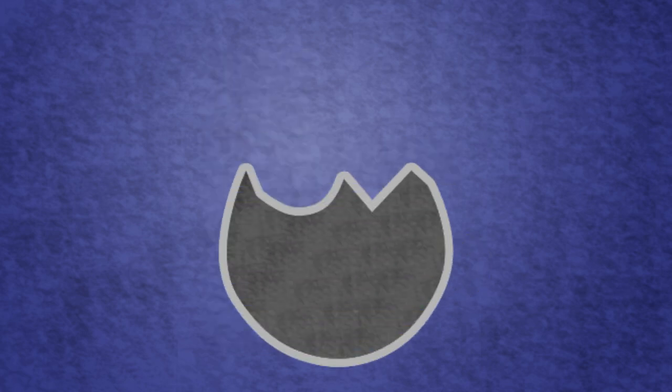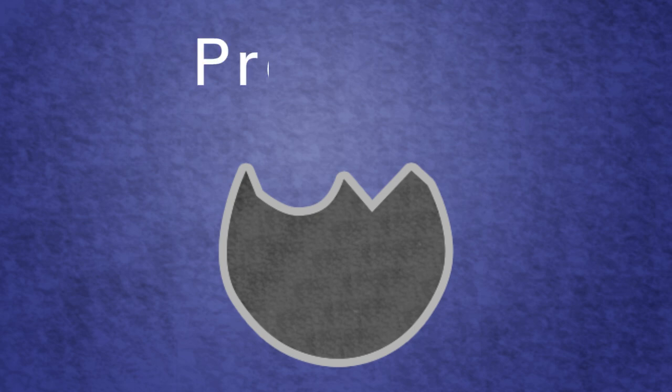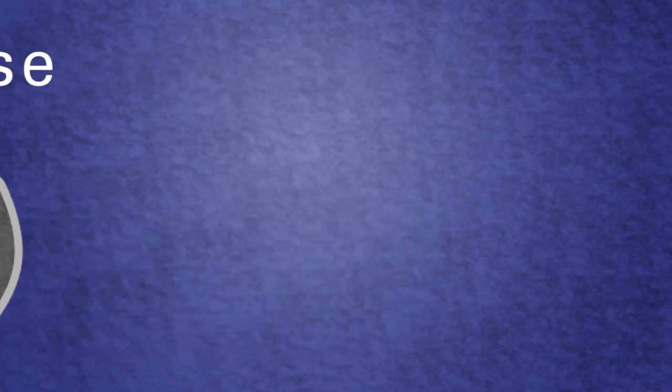We can tell if something is an enzyme just from its name. Most enzymes have the suffix '-ase'. The prefix tells us what that enzyme is specific to.